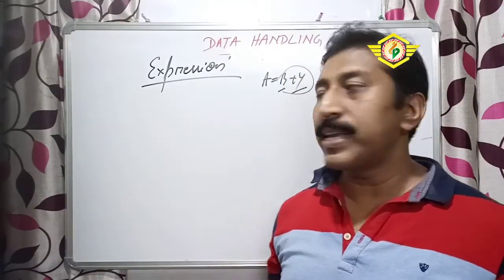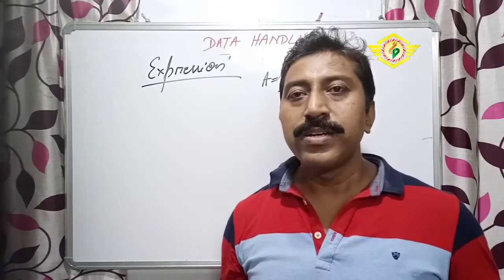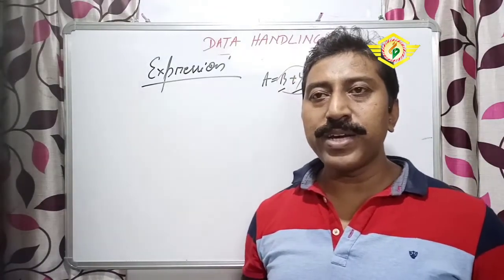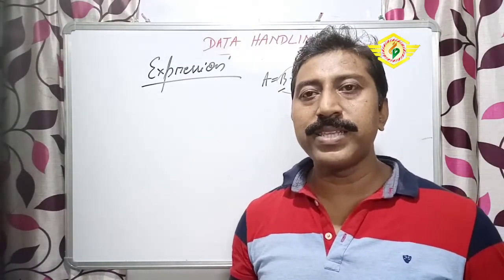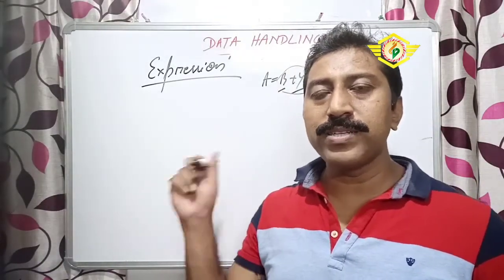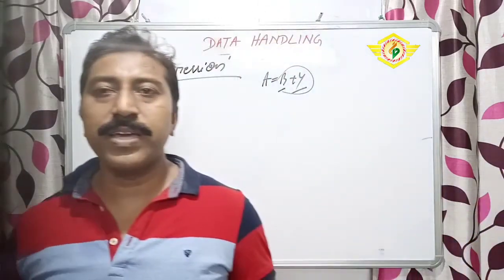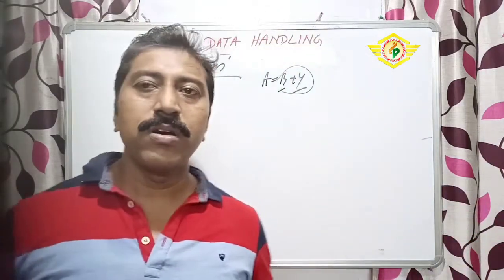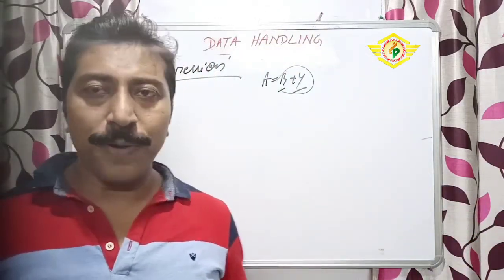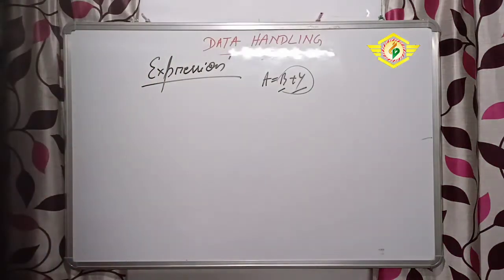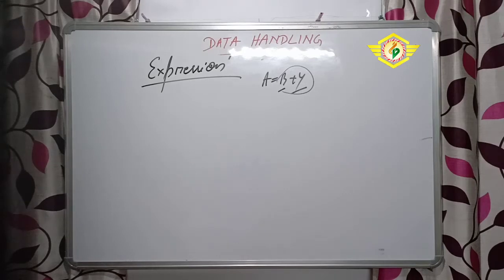Here only a plus sign is there and one equal sign is there. In few cases we can store many things - not only this operator, we can use some more examples, we can use more operators also. First we will take the arithmetic operations, arithmetic expressions.